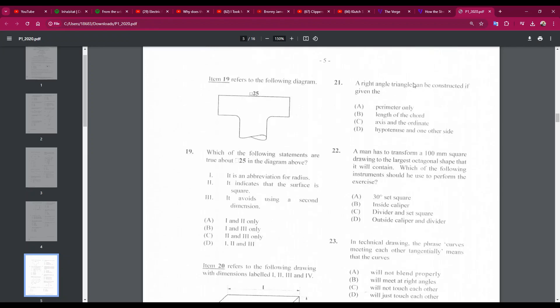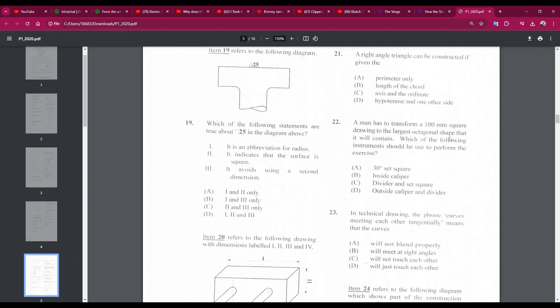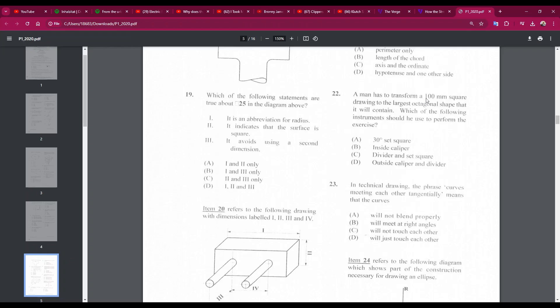Number 21: a right-angled triangle can be constructed if given the hypotenuse and one other side. The answer is D, the hypotenuse and one other side. A man has to transform a 100-millimeter square drawing to the largest octagonal shape that it will contain. Which of the following instruments should he use to perform the exercise? The answer is C. He'll need a divider for the lengths of the lines and a set square. A 45-degree set square, to be specific.